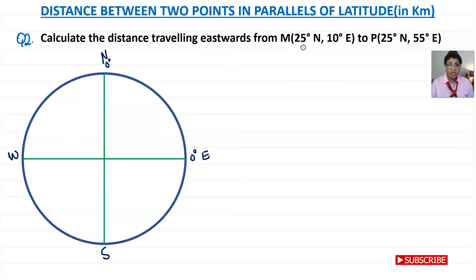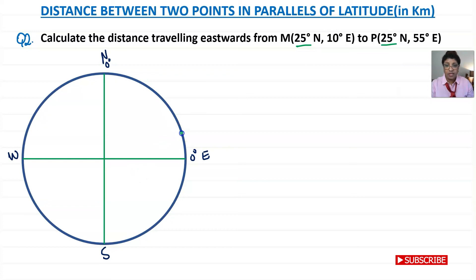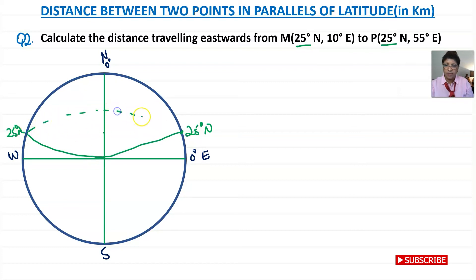Point M is located at 25 degrees north, 10 degrees east, and point P is at 25 degrees north, 55 degrees east. Again we're moving along the parallel of latitude, so we're dealing with a small circle and the radius for that is R cos theta. Let's put that in a diagram — 25 degrees north is up here, the same on both sides.